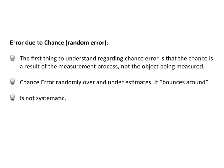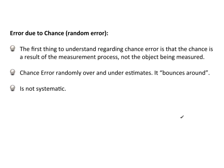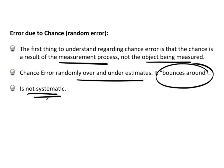Now, error due to chance, the chance error I was talking about earlier. First thing that I stated regarding chance error is that the chance error is the result of the measurement process and not the object that's actually being measured. The chance error randomly overestimates. It kind of bounces around. Whereas, a bias is one-sided. Typically, it's always overestimating or underestimating. And there's nothing systematic about chance error.